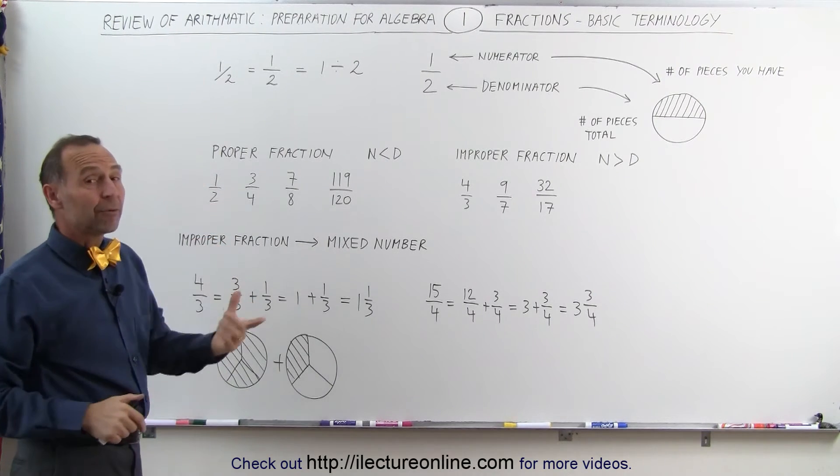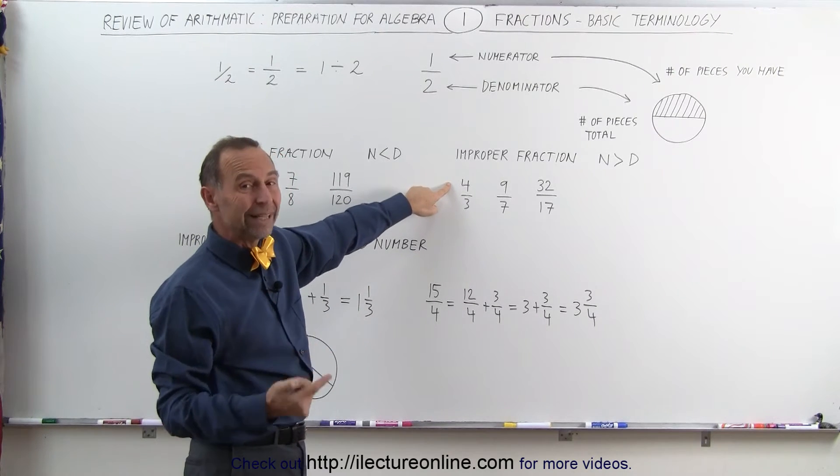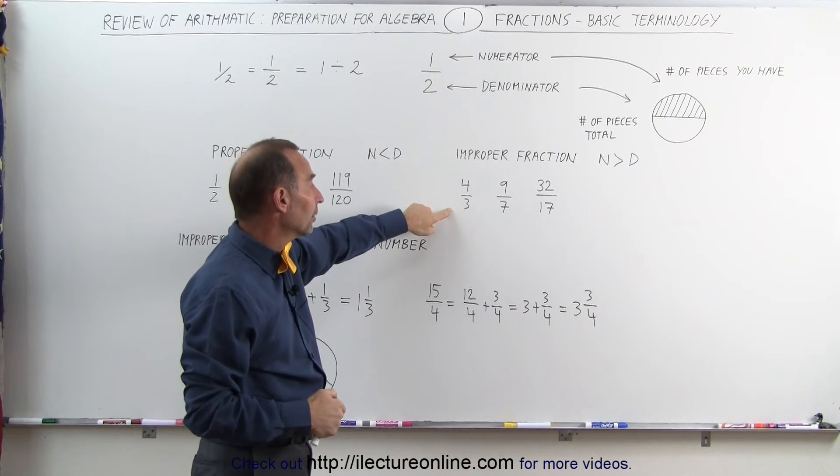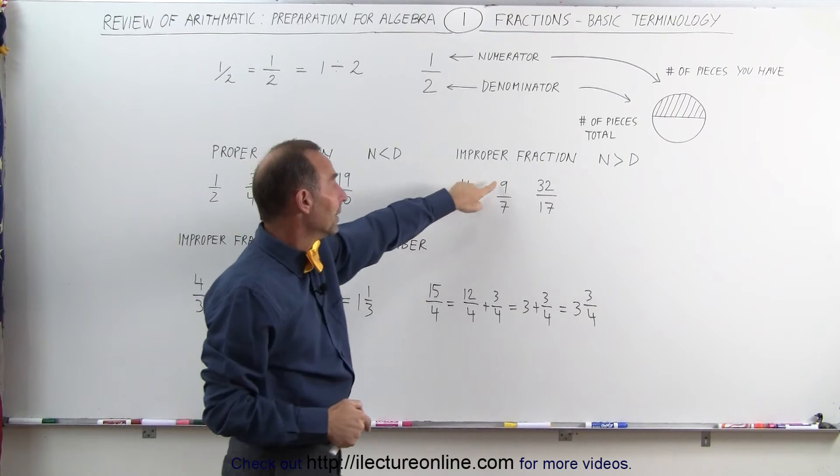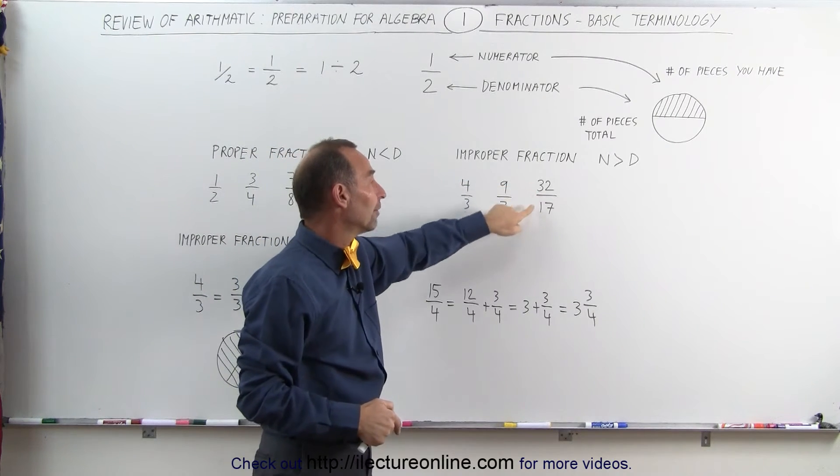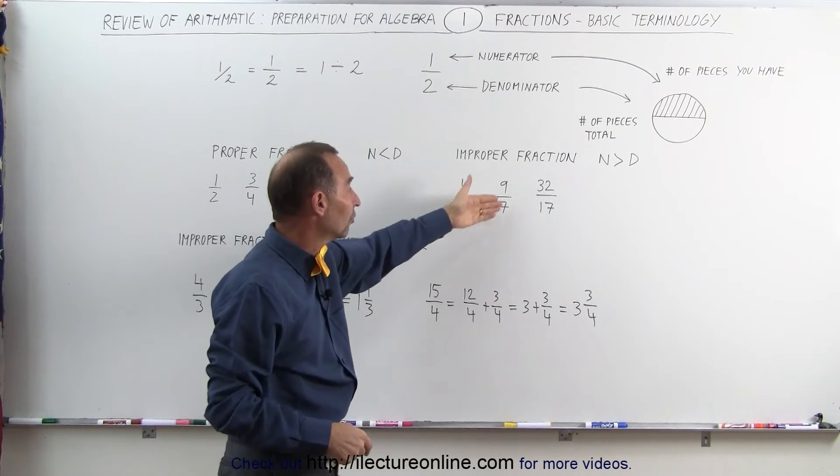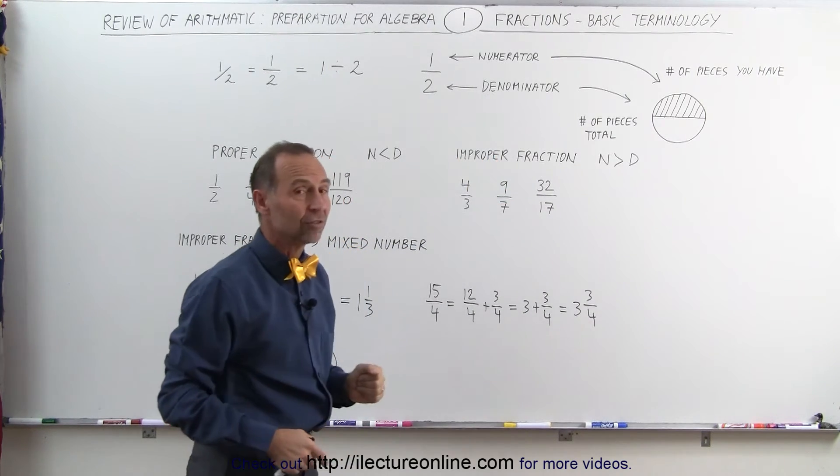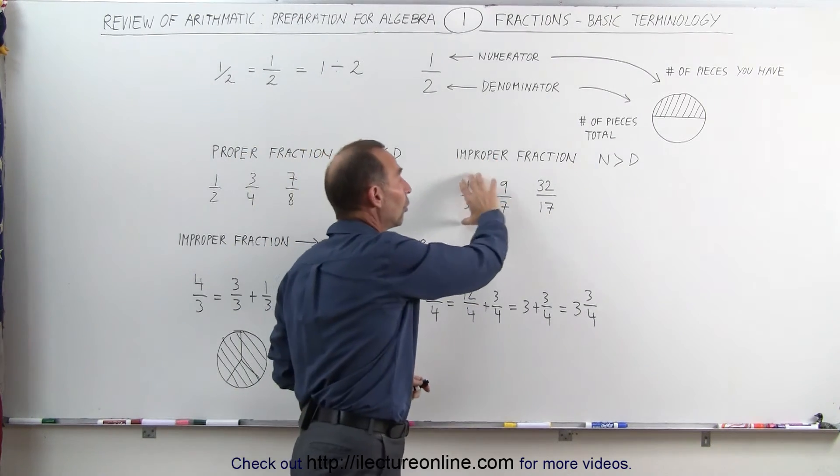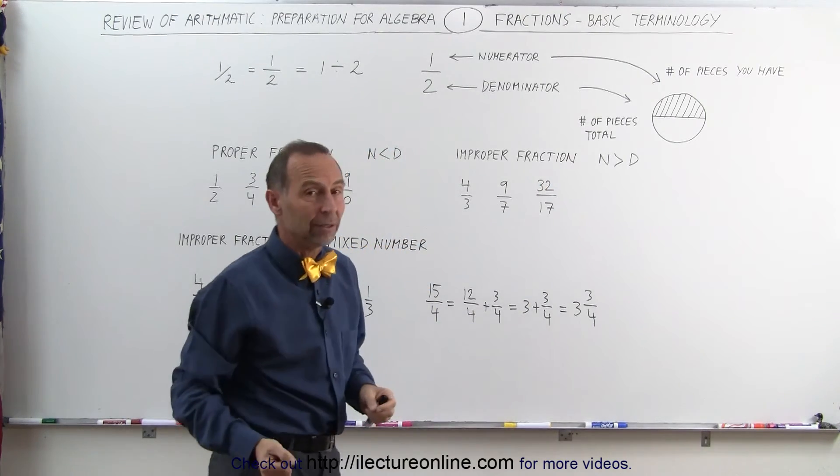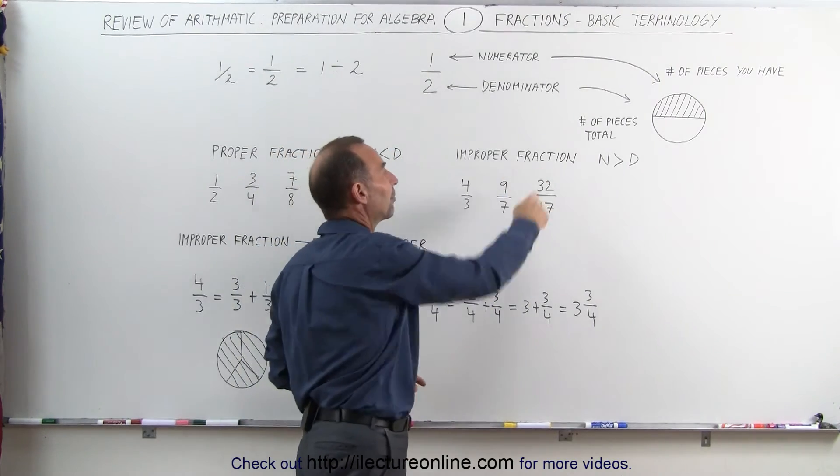An improper fraction is where the number at the top—the numerator—is bigger than the denominator: 4 divided by 3, 9 divided by 7, 32 divided by 17, or said 4 thirds, 9 sevenths, 32 seventeenths. All these fractions are bigger than 1. They're called improper fractions.